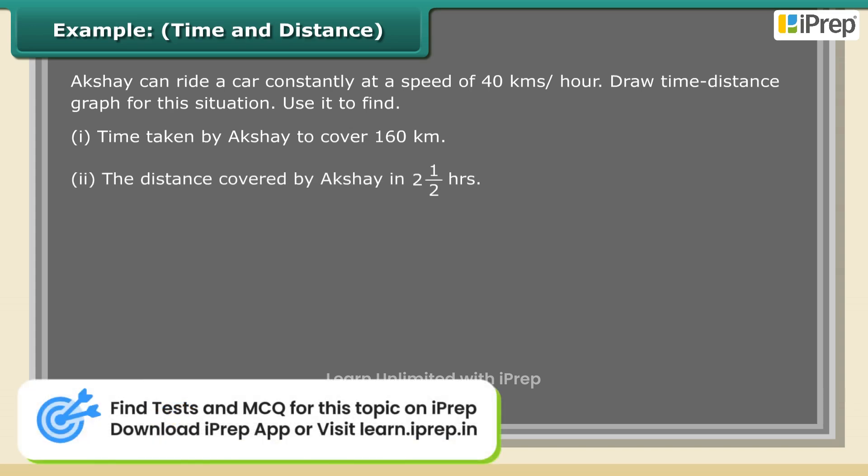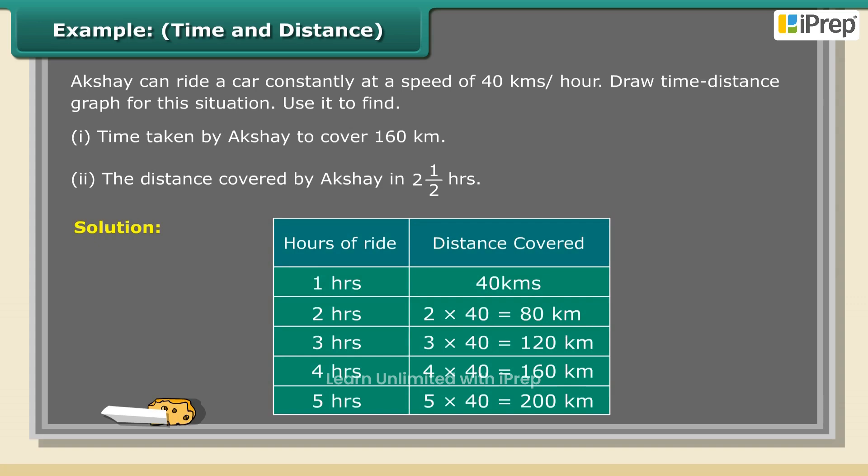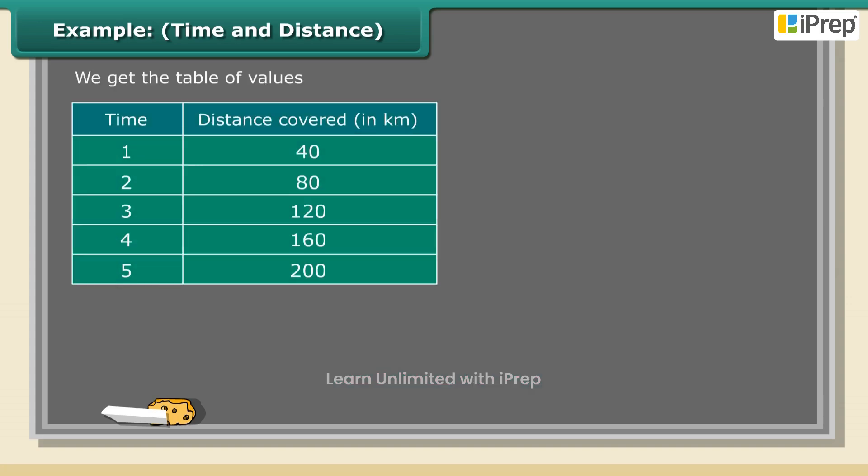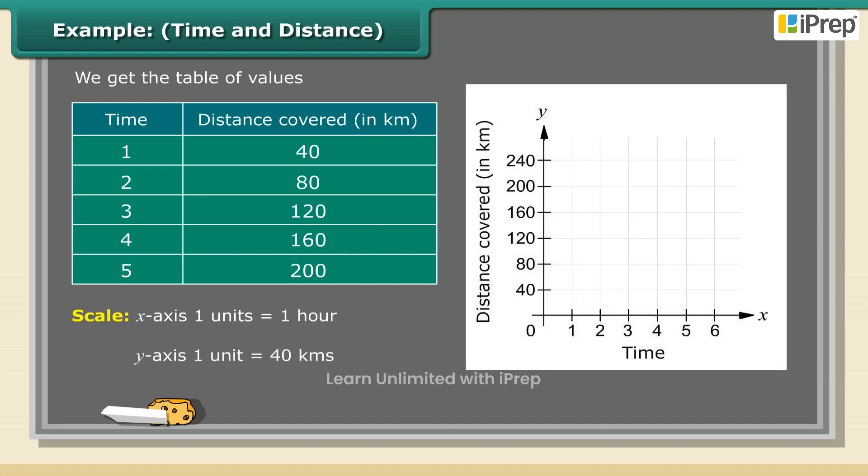We get the table of values. Scale: x-axis 1 unit is equal to 1 hour, y-axis 1 unit is equal to 40 kilometers. Mark time on the horizontal axis.